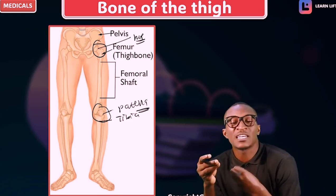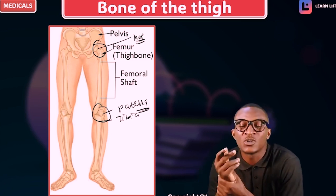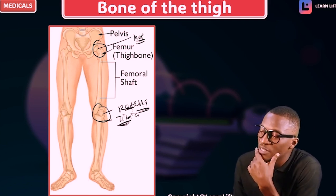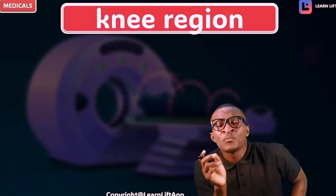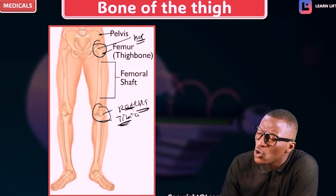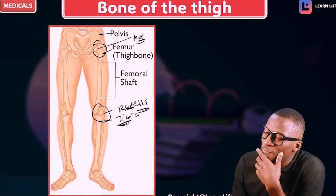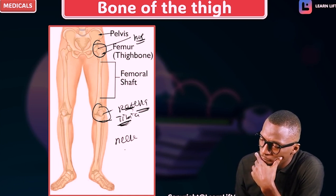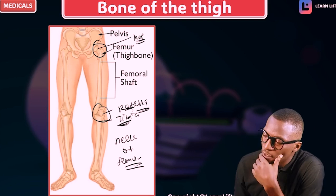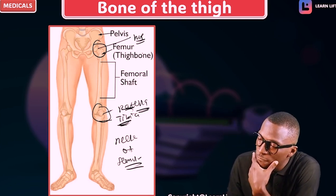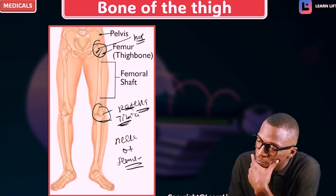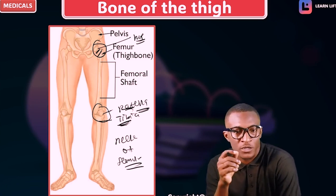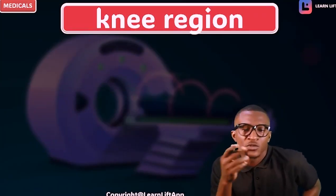So the femur articulates with the hip bone to form the hip joint, and it articulates with the patella and the tibia — not the fibula — to form the knee joint. Take note that the commonest point of fracture of the femur is called the neck of the femur. Not the head — the neck. The neck of the femur is the commonest point of fracture.